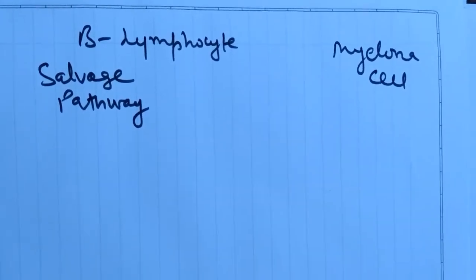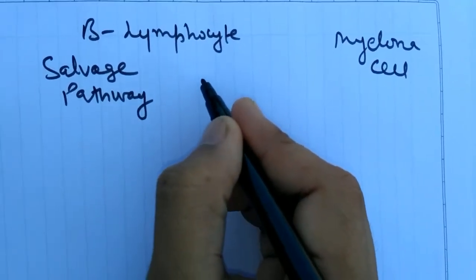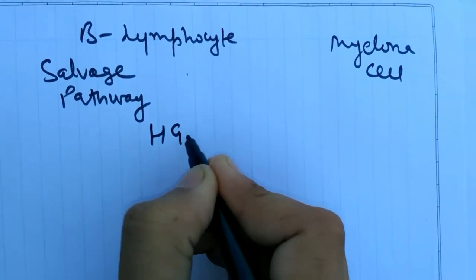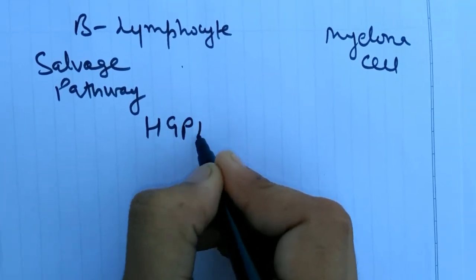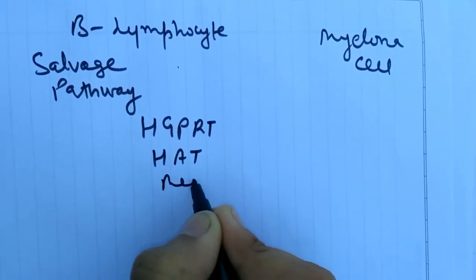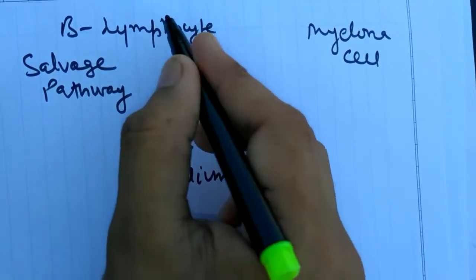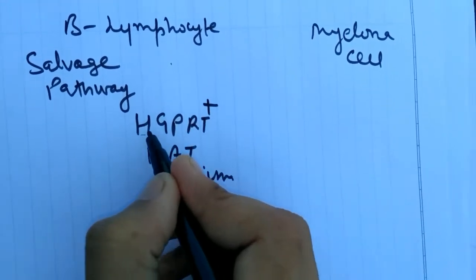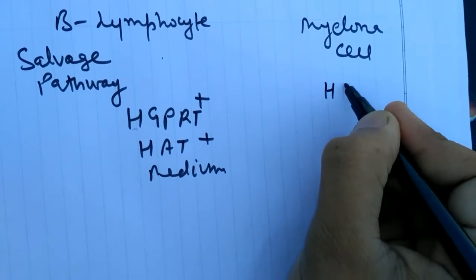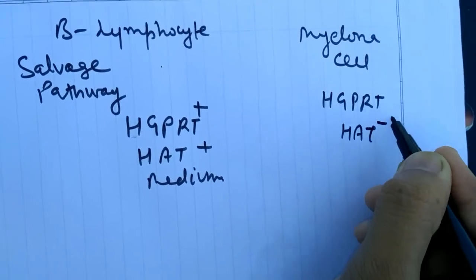Here we grow the nucleotide or nucleic acid from the nucleotide polymers. The medium used is the HGPRT and HAT medium. The B lymphocytes are positive for HGPRT and HAT, and myeloma cells are negative for HGPRT and HAT culture.